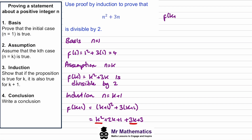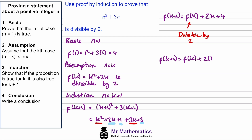We can write k squared plus three k in terms of f of k. So f of k plus one equals f of k plus the remaining terms, two k and four. So f of k plus one equals f of k plus two k plus four. Based on our assumption, f of k is divisible by two, so we just need to show the remaining terms are also divisible by two. Factoring out two from two k plus four gives f of k plus one equals f of k plus two lots of k plus two. This is clearly divisible by two because it's a multiple of two. So that's our third step completed — we've shown f of k plus one is divisible by two.